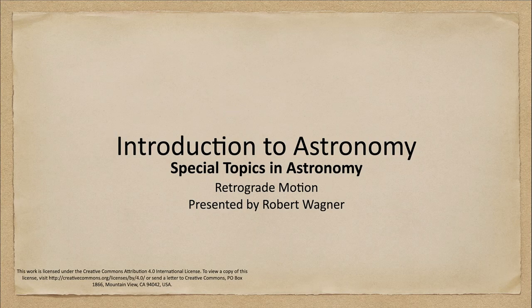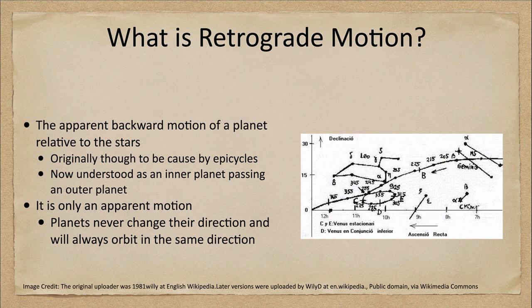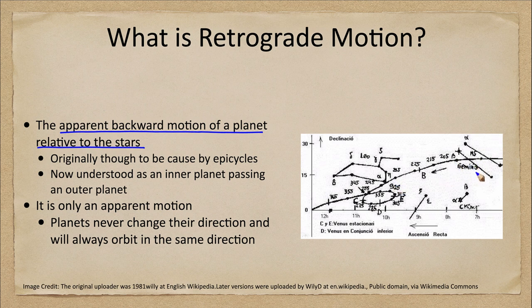Greetings and welcome to the introduction to astronomy. In this week's special topic in astronomy, we are going to talk about retrograde motion and try to understand what that means for motions of planets in the sky. So what is retrograde motion? Let's define it first: the apparent backward motion of a planet relative to the stars. Here we can see an example as a planet moves through the sky.